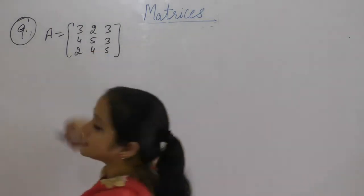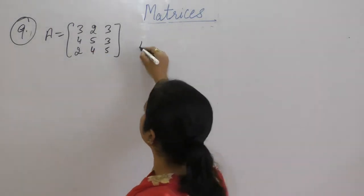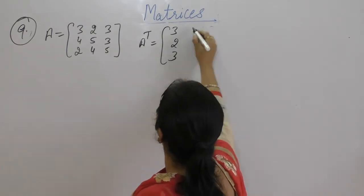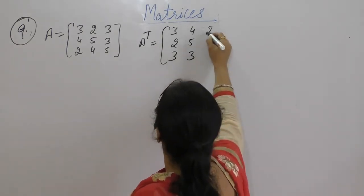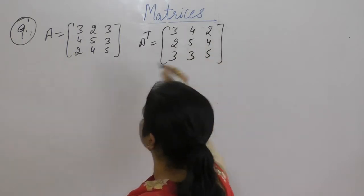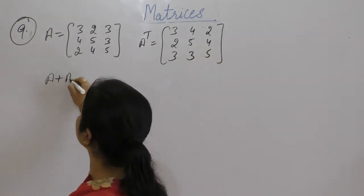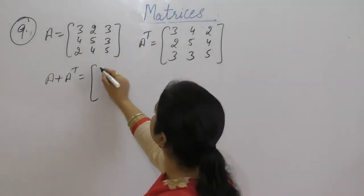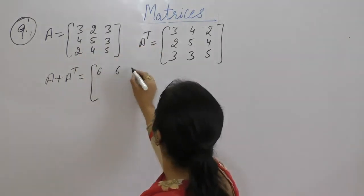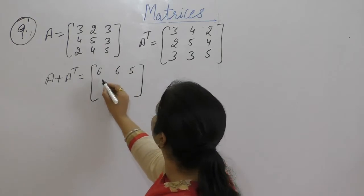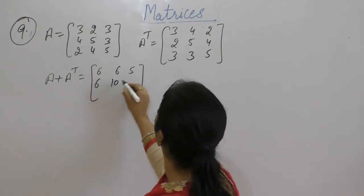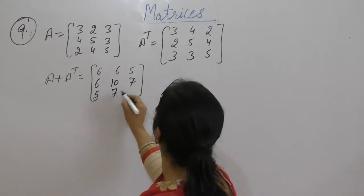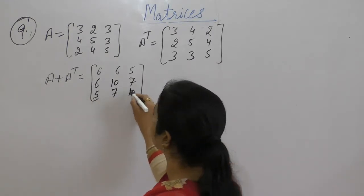Now compute A plus A transpose by adding corresponding terms: 3+3, 3+4, 3+2 in the first row; 4+3, 5+5 in the diagonal; and similarly for remaining entries. Then compute A minus A transpose: 3-3, 2-4, 3-2; 4-2, 5-5, 3-4; 2-3, 4-3, 5-5.